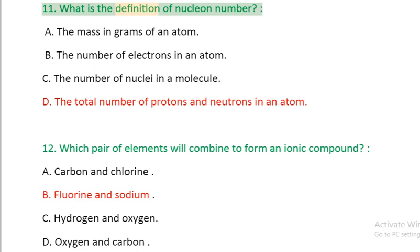Question 11: What is the definition of nucleon number? A. The mass in grams of an atom, B. The number of electrons in an atom, C. The number of nuclei in a molecule, D. The total number of protons and neutrons in an atom.